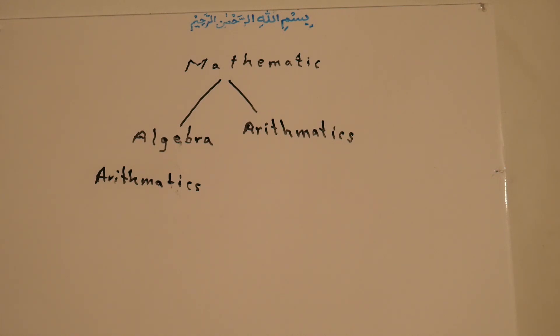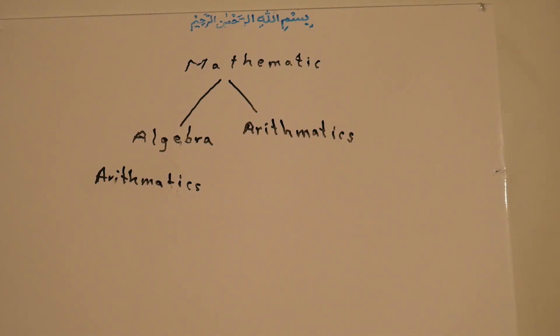So what is arithmetic? Arithmetic is the science of counting quantities and numbers. For example, like length, capacity, weight, time, and so on.